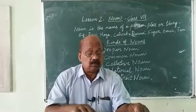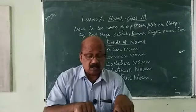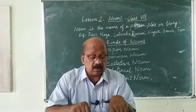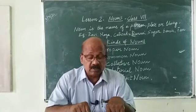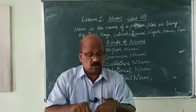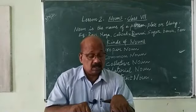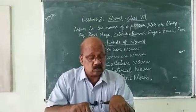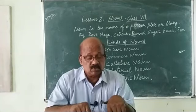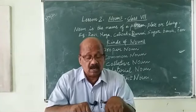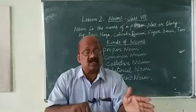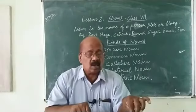Then, next noun is collective noun. Names assigned to the collections or groups of persons, places, or things are called collective nouns. For example: crowd, people, gang, jury, police, bunch, flock, herd, assembly, block, regiment, grove, mob, etc. They belong to collective noun.